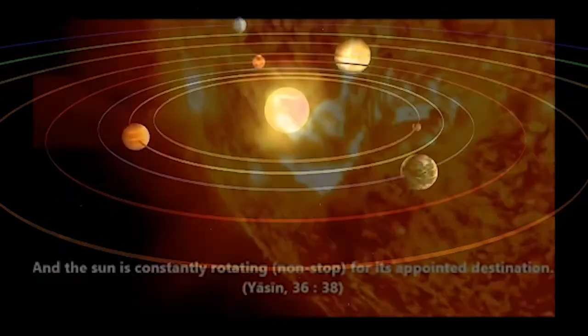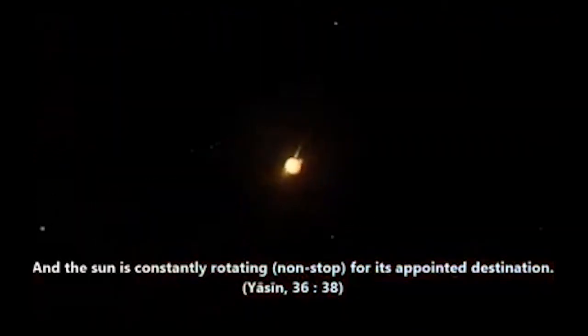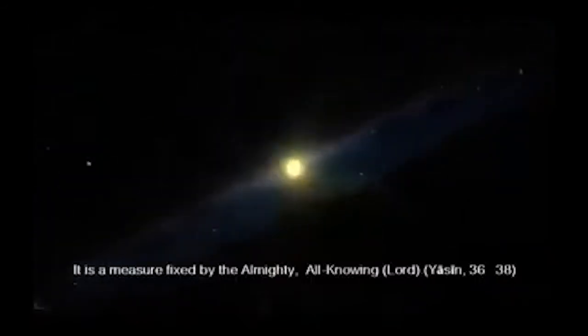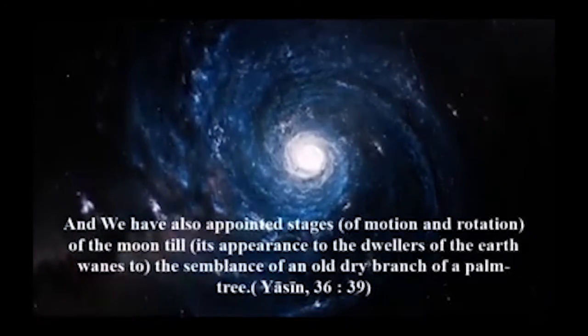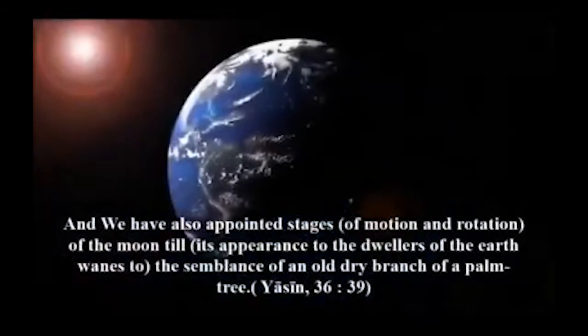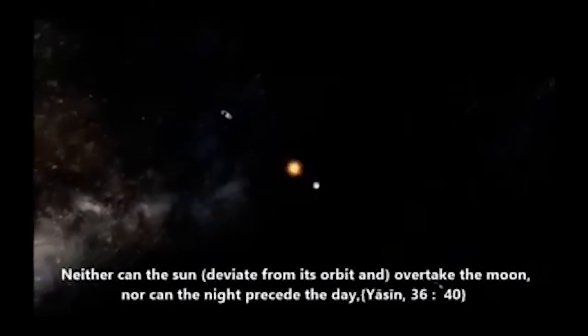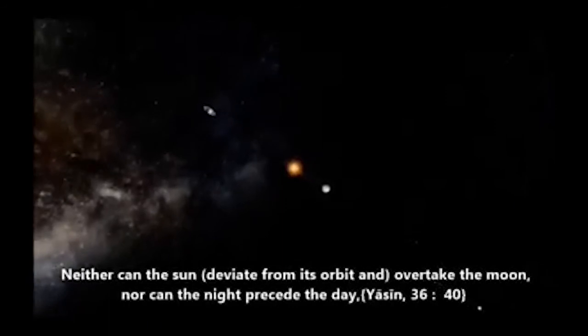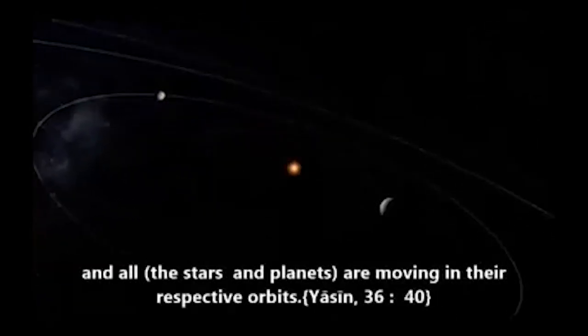And the sun runs on course toward its stopping point. That is the determination of the Exalted in Might, the Knowing. And the moon - We have determined for it phases until it returns appearing like the old date stalk. It is not allowable for the sun to reach the moon, nor does the night overtake the day, but each, in an orbit, is swimming.